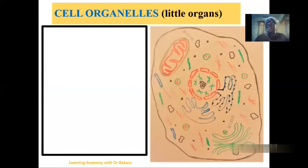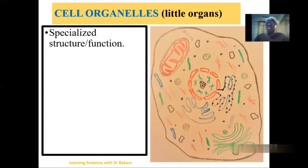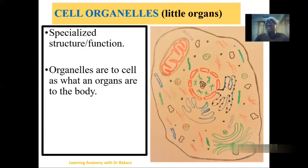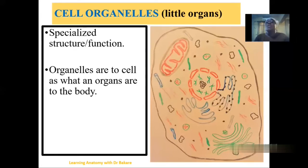Cell organelles are also referred to as little organs or small organs because they tend to perform specific functions, and they are also specific in terms of structure. Just as the organs in the body are specific in structure and perform specific functions to aid survival, so also in the cell, these organelles are structurally distinct and tend to perform specific functions, allowing the cell to be able to live an independent life.